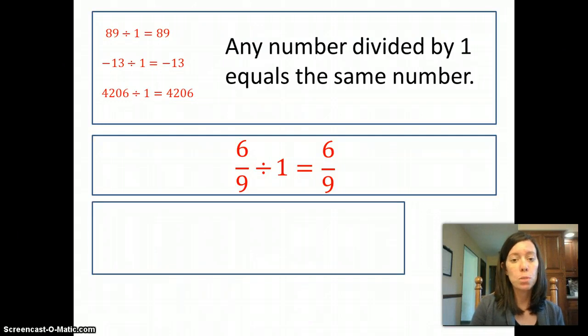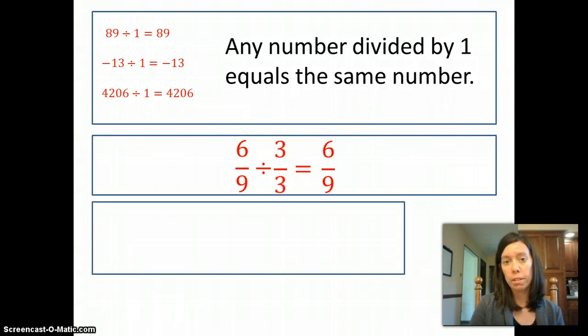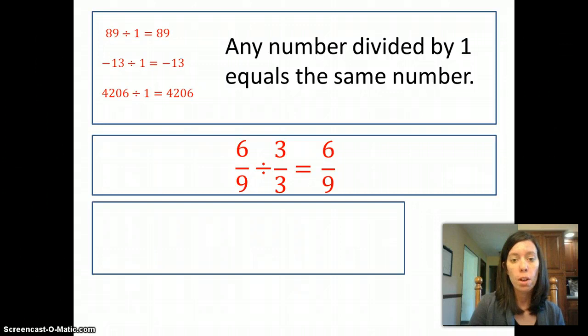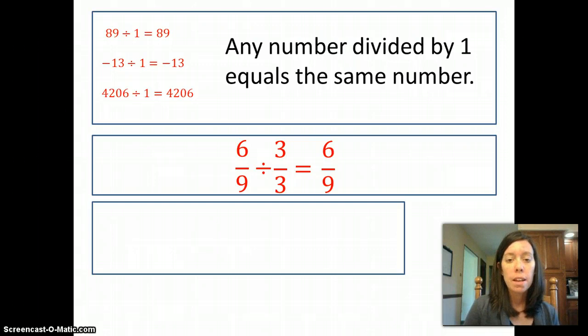What we're going to do is replace 1 with a fraction that's equivalent to 1. 3 divided by 3 is 1. So we're just replacing the 1 with another way of representing 1. And when we do 6 ninths divided by 3 thirds, the result is 2 thirds.